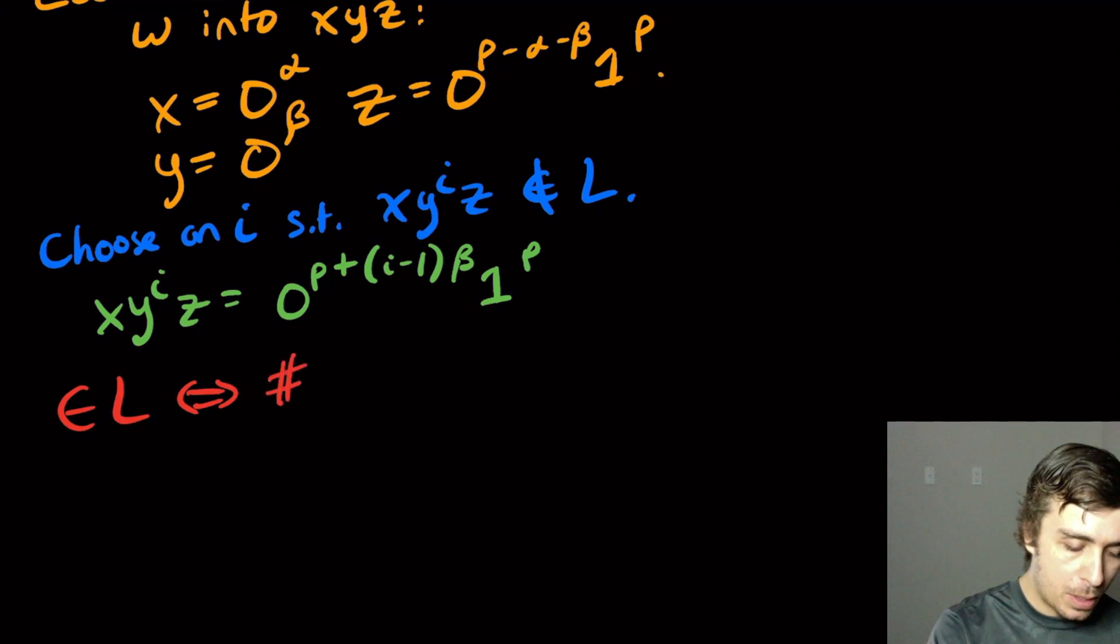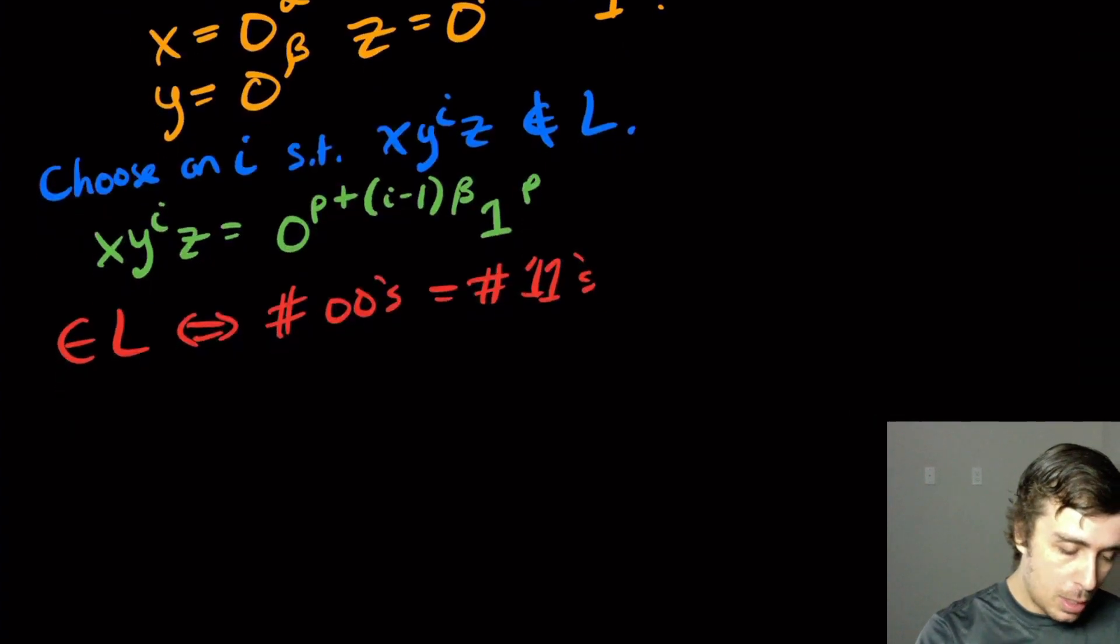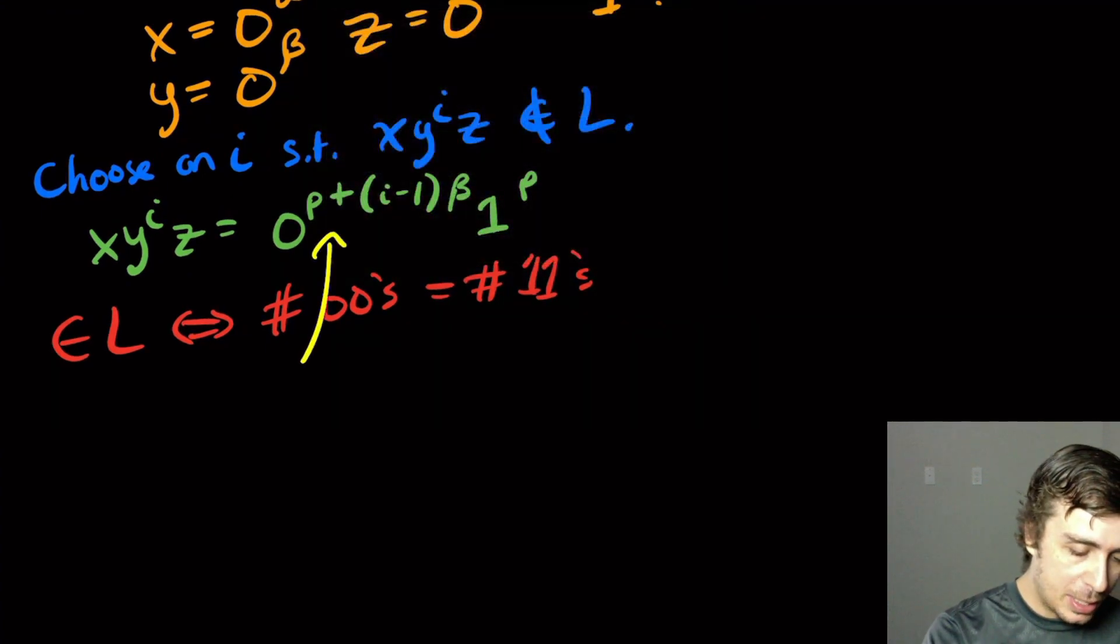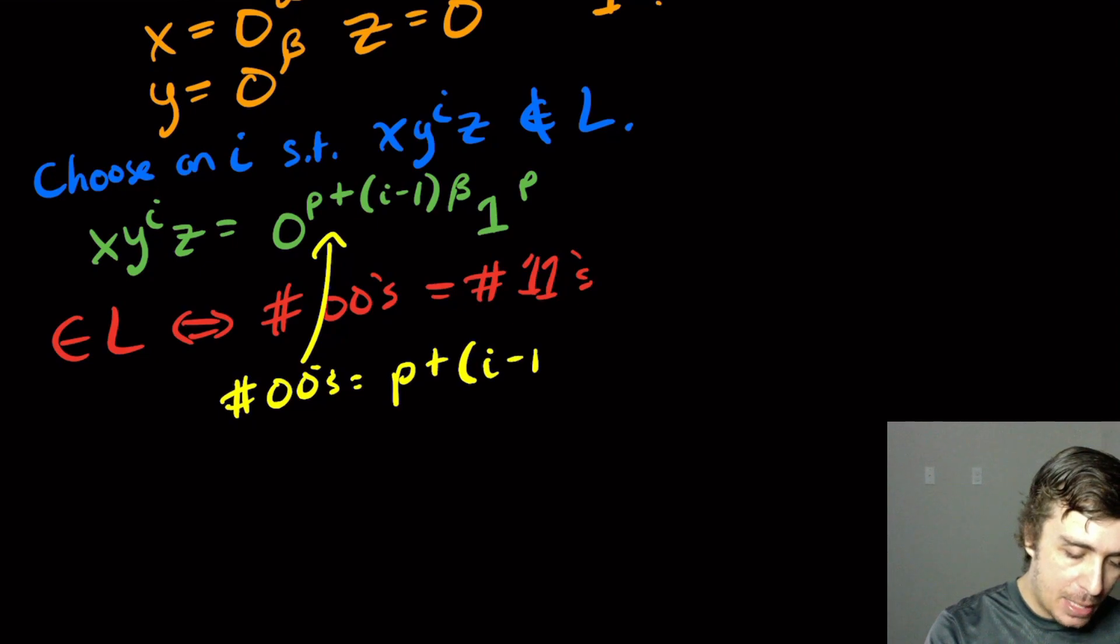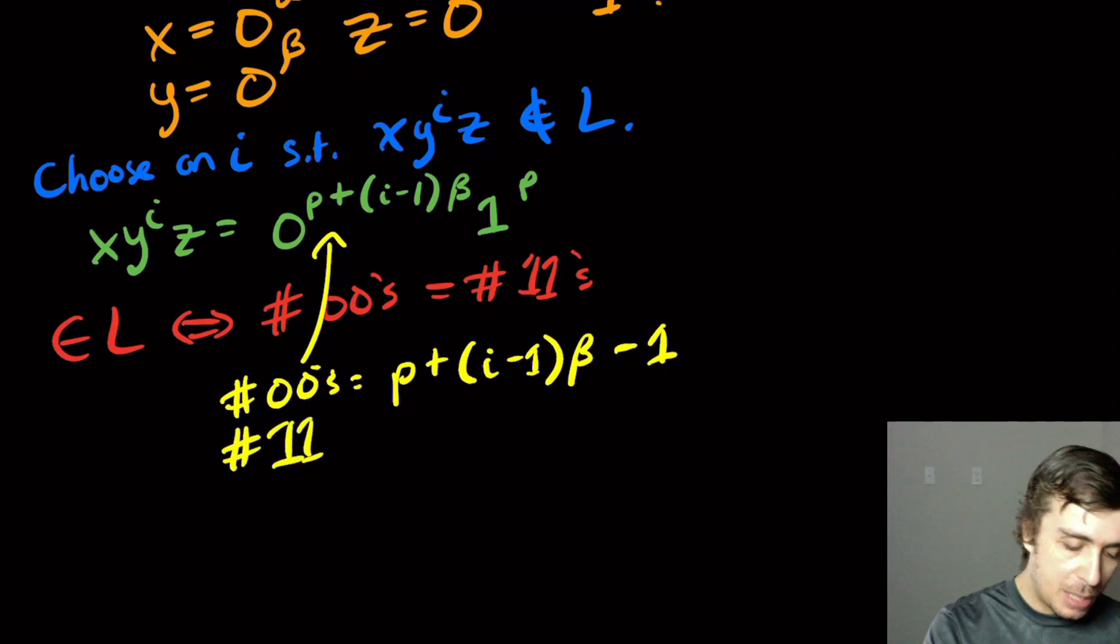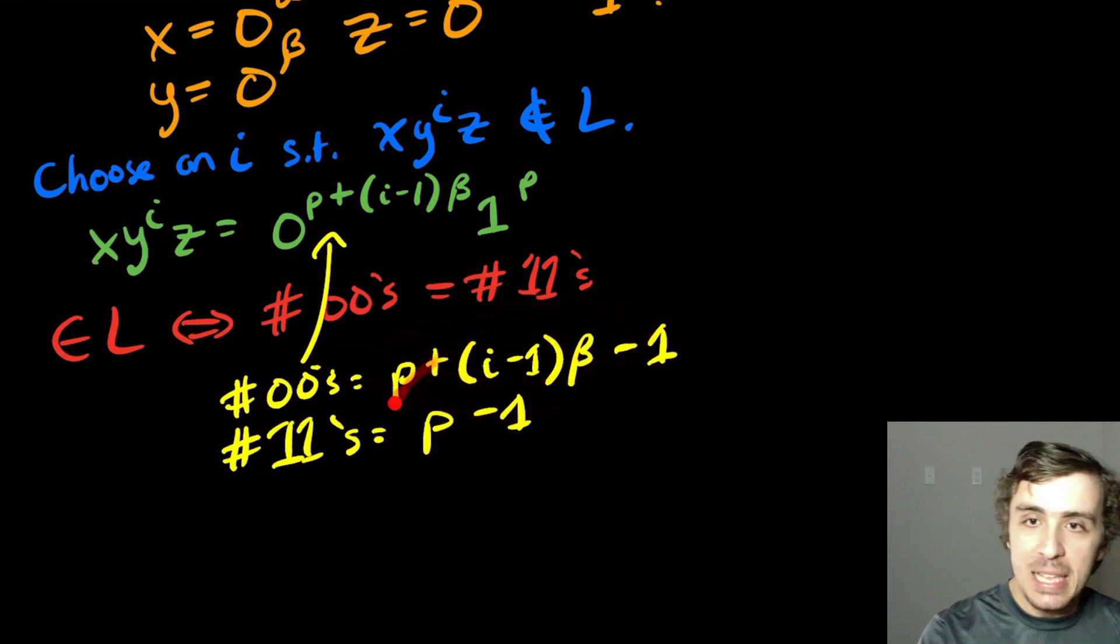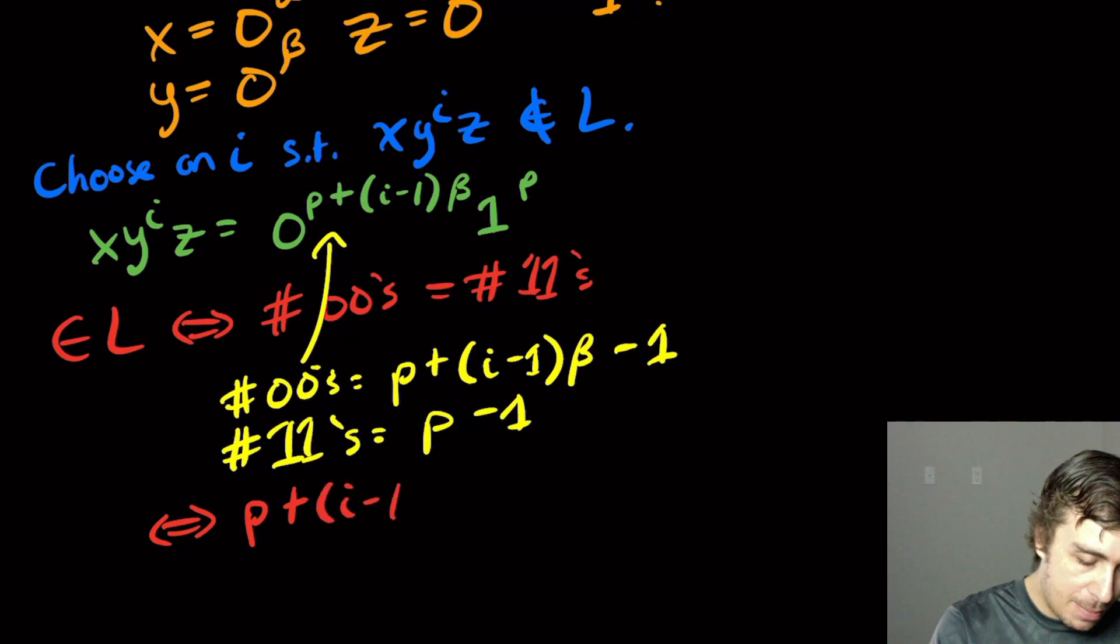So this thing is in L if and only if the number of 00s equals the number of 11s. We want to show that the numbers are actually different, or choose an i for which they are different. The number of 00s is P + (i-1)β - 1, and the number of 11s is P - 1. This thing is in L if and only if P + (i-1)β - 1 = P - 1.